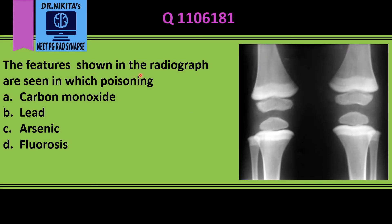The features shown in the radiograph are seen in which poisoning? This is a radiograph of the knee where we see dense white metaphyseal bands in the femur, tibia, and fibula bilaterally.